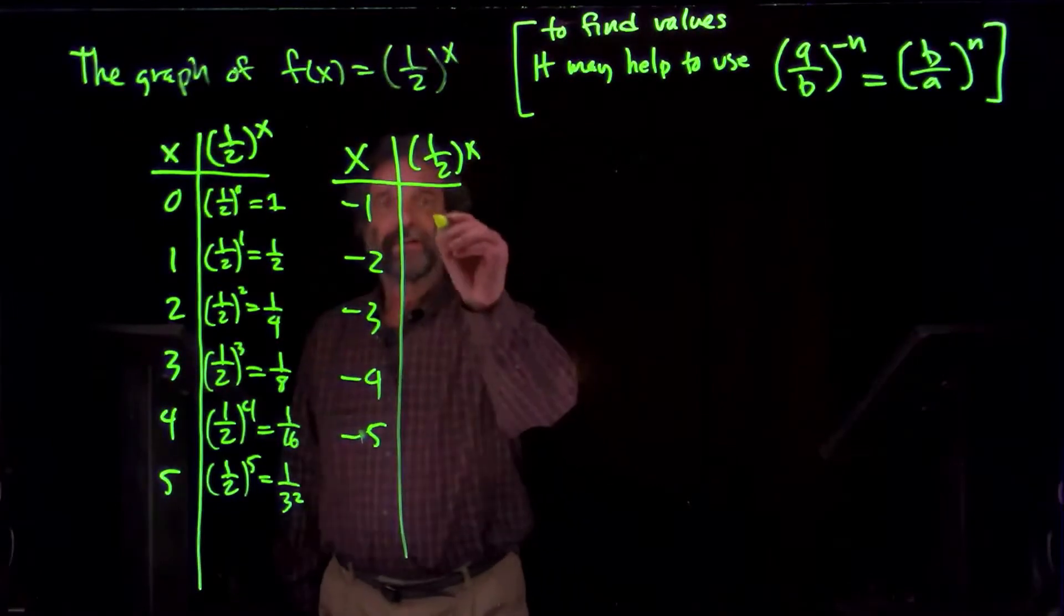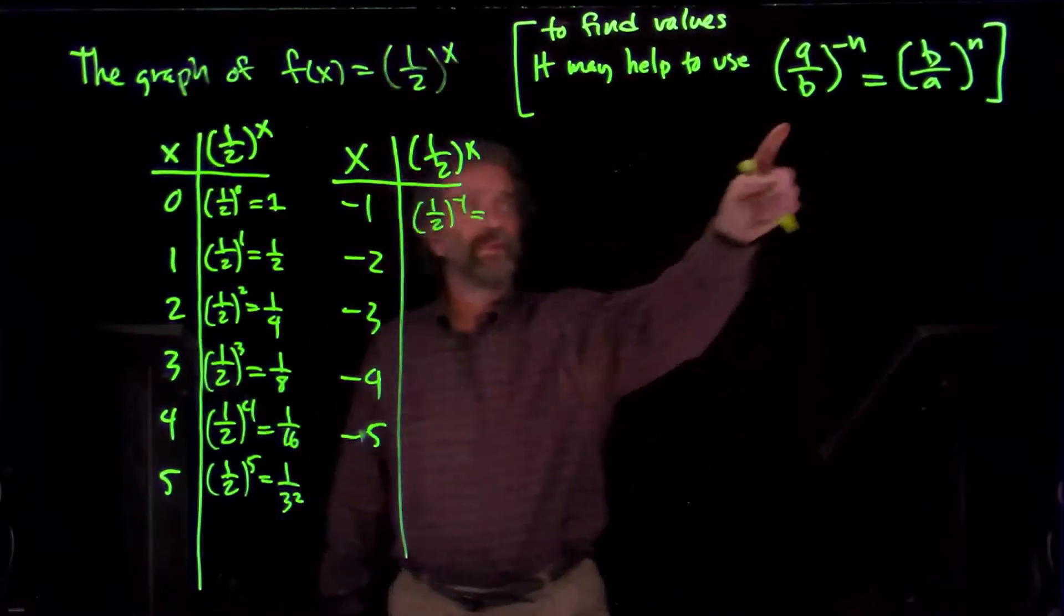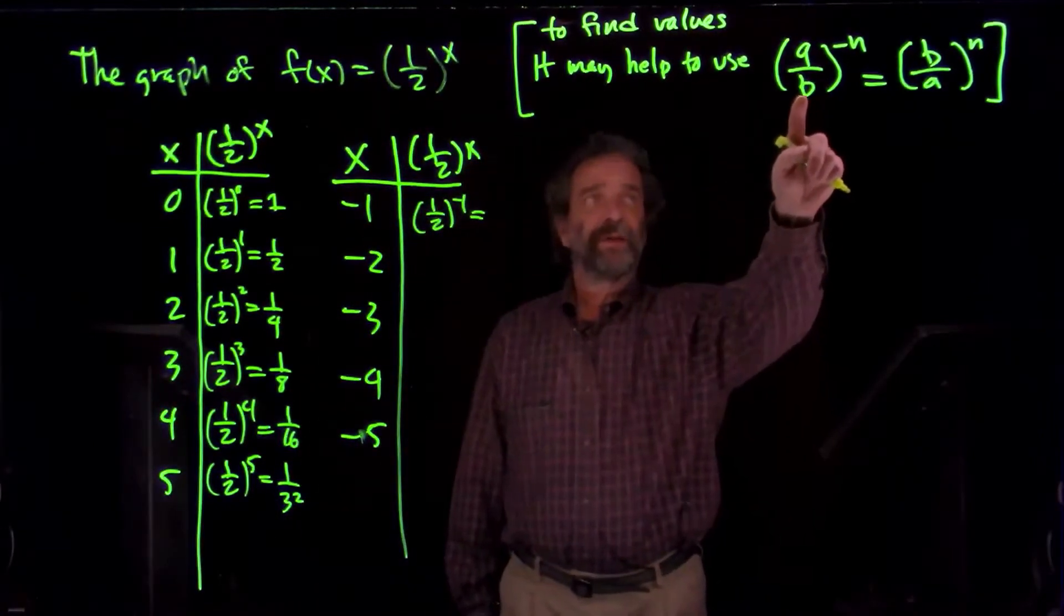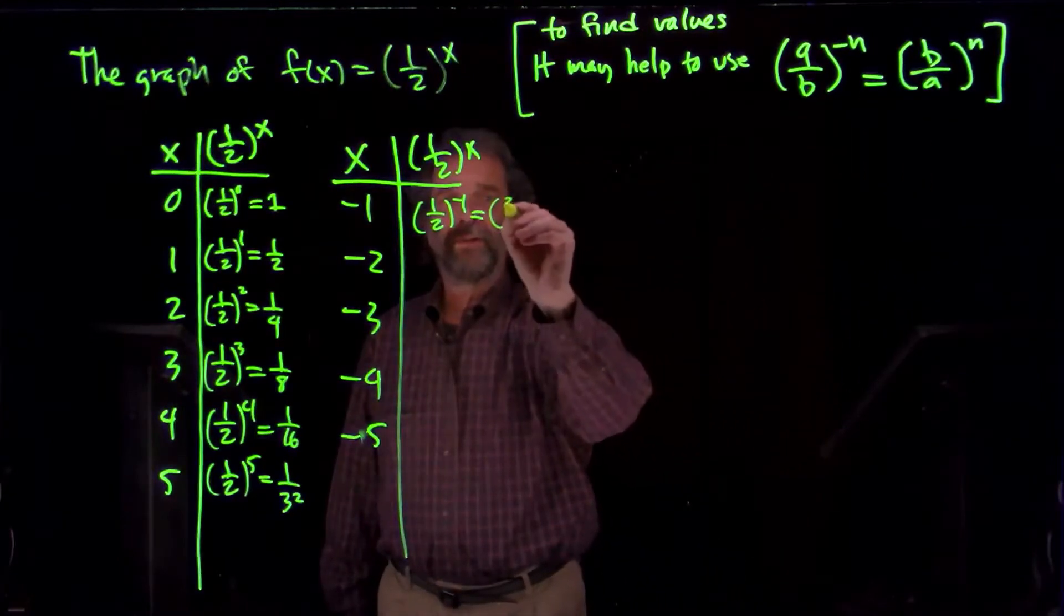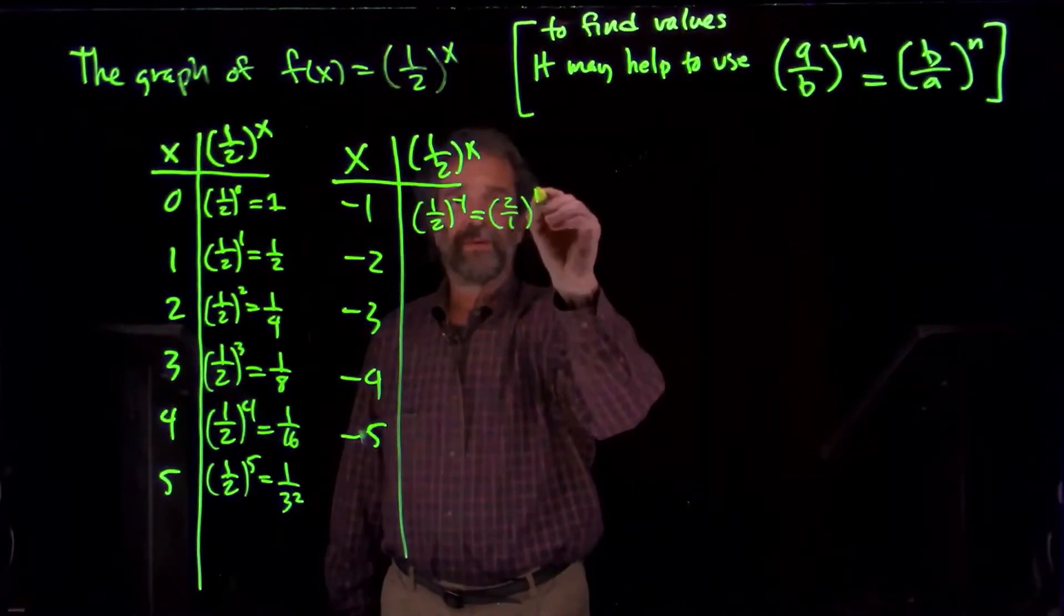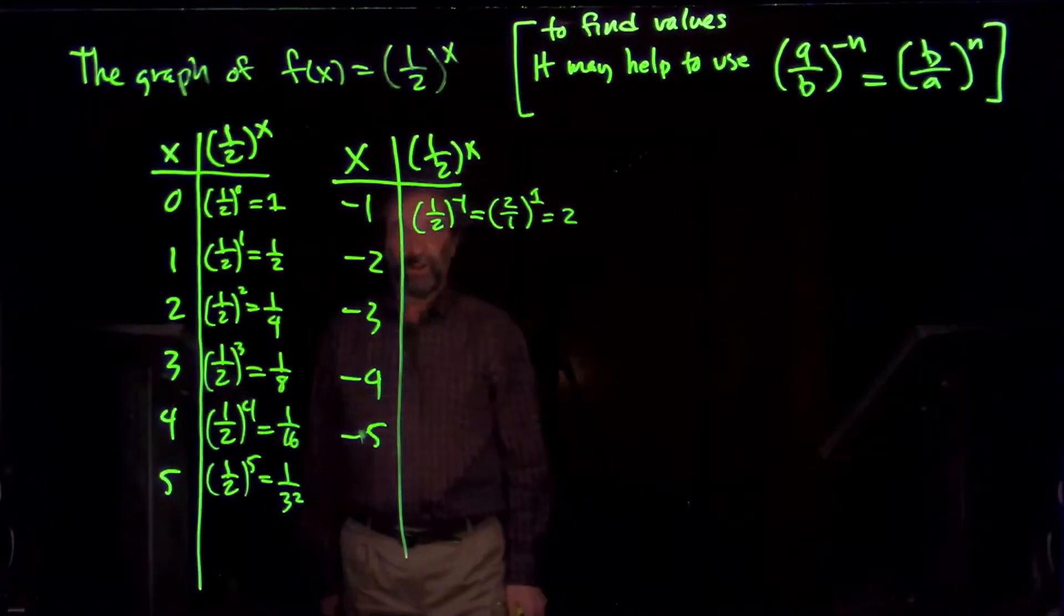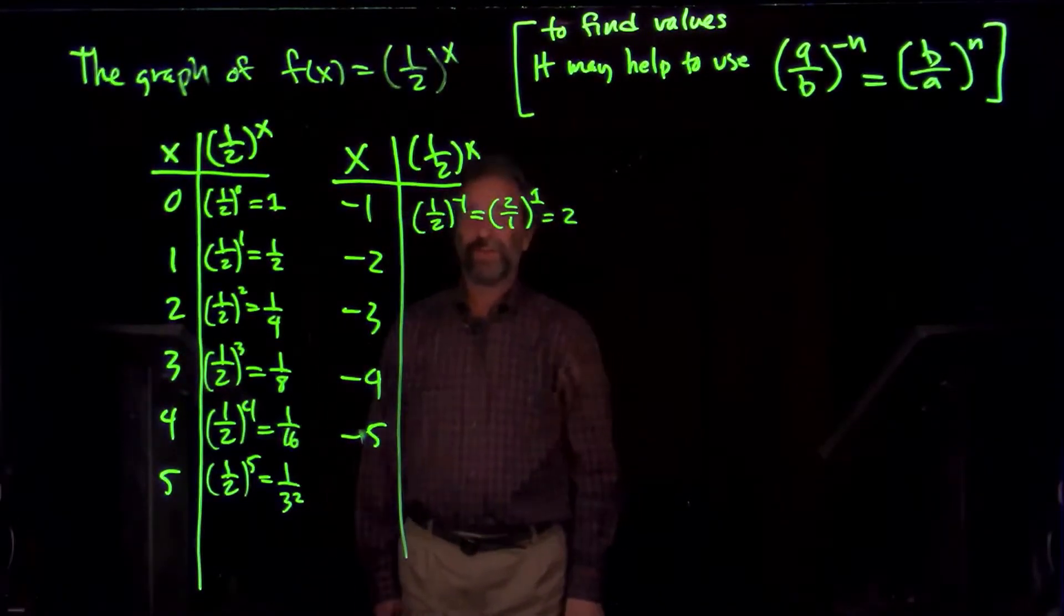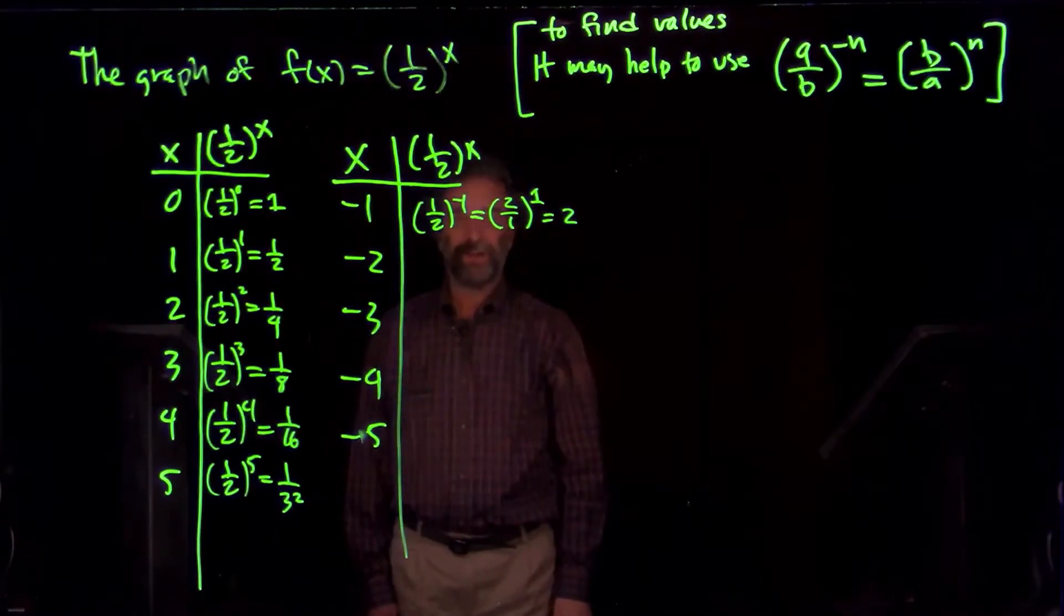For negative exponents, one-half to the minus 1, I'm going to use this rule here, so that you can change the sign of the exponent as long as you turn the fraction upside down. So that will be 2 over 1, which is just 2 to the first, which is 2. Or one-half to the minus 1 is 1 over one-half to the 1, which is 1 over one-half, and 1 over one-half turns out to be 2.